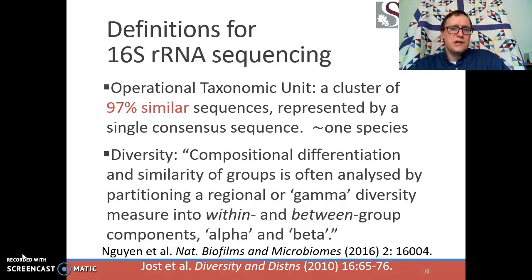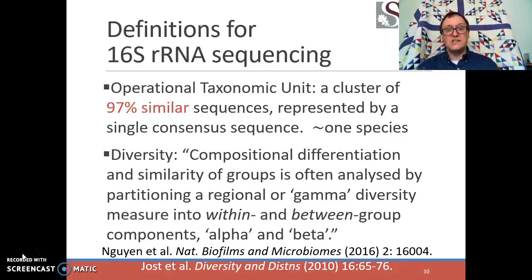When we evaluate the diversity of the species present in a sample, we typically call that alpha diversity. Within one sample, if I see 600 different OTUs, that would be one statement of alpha diversity.